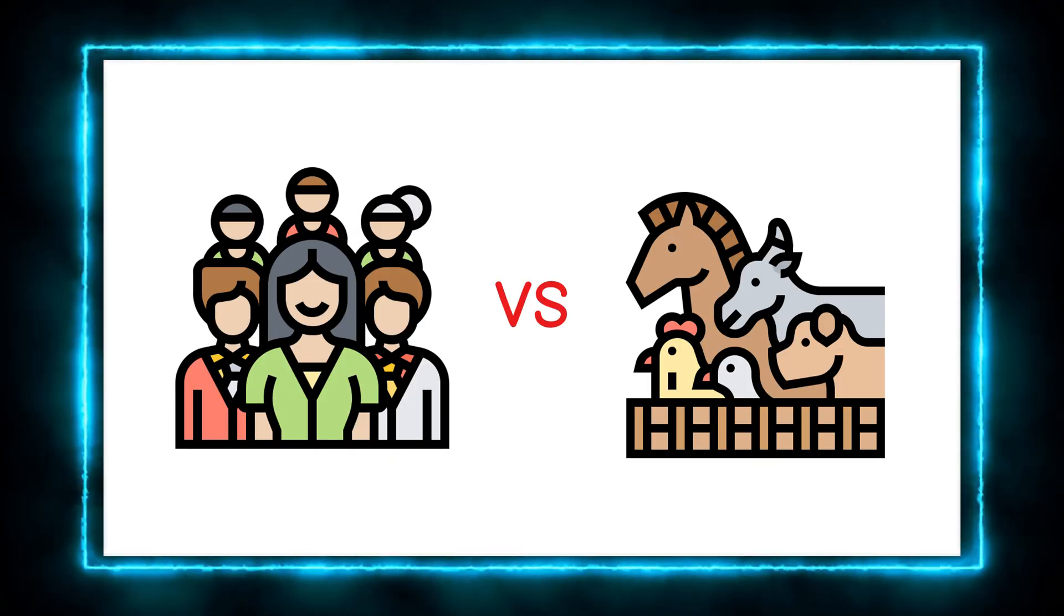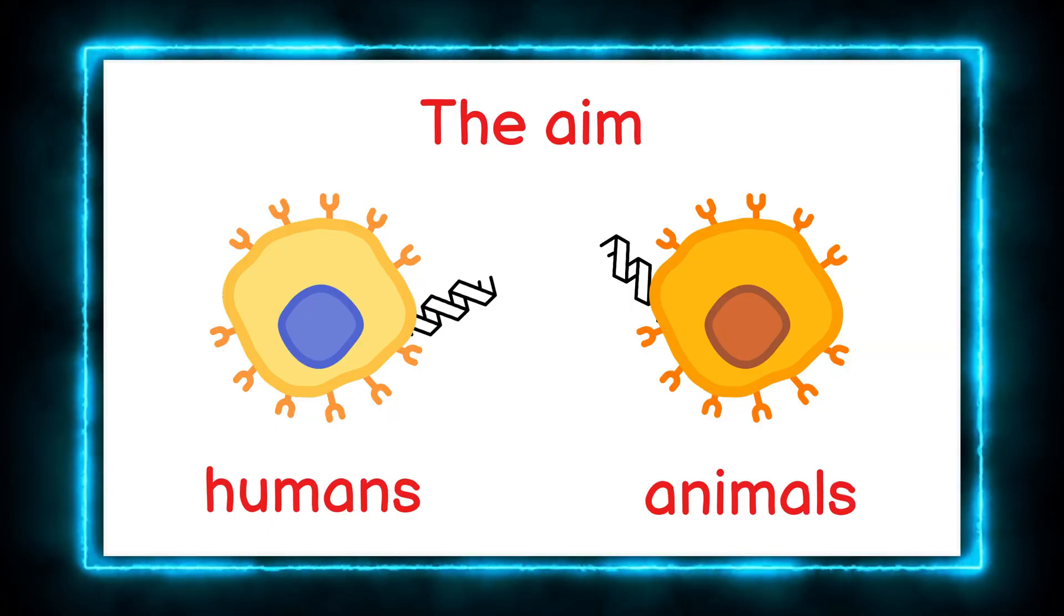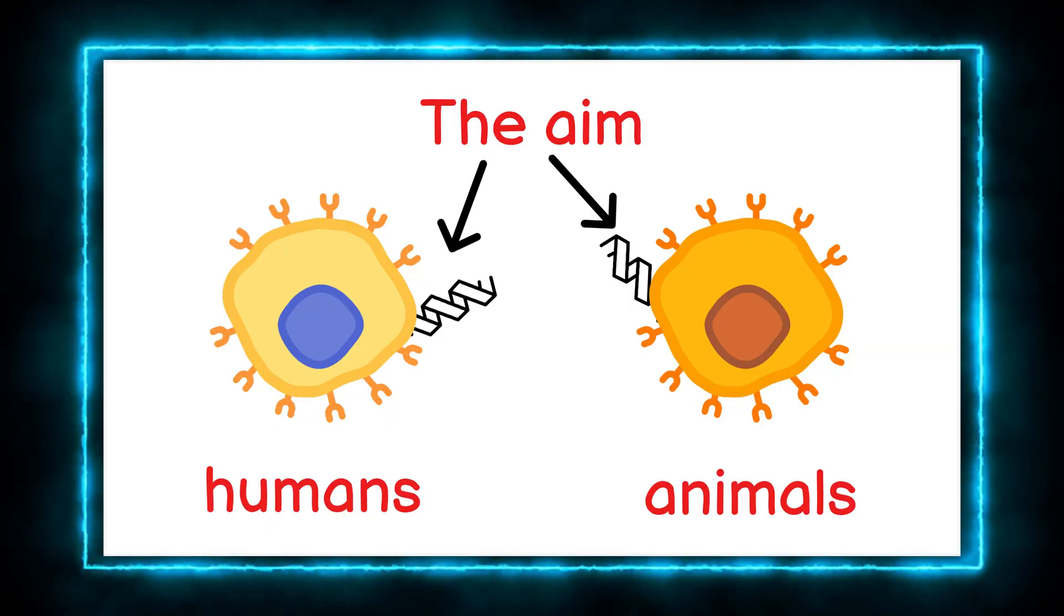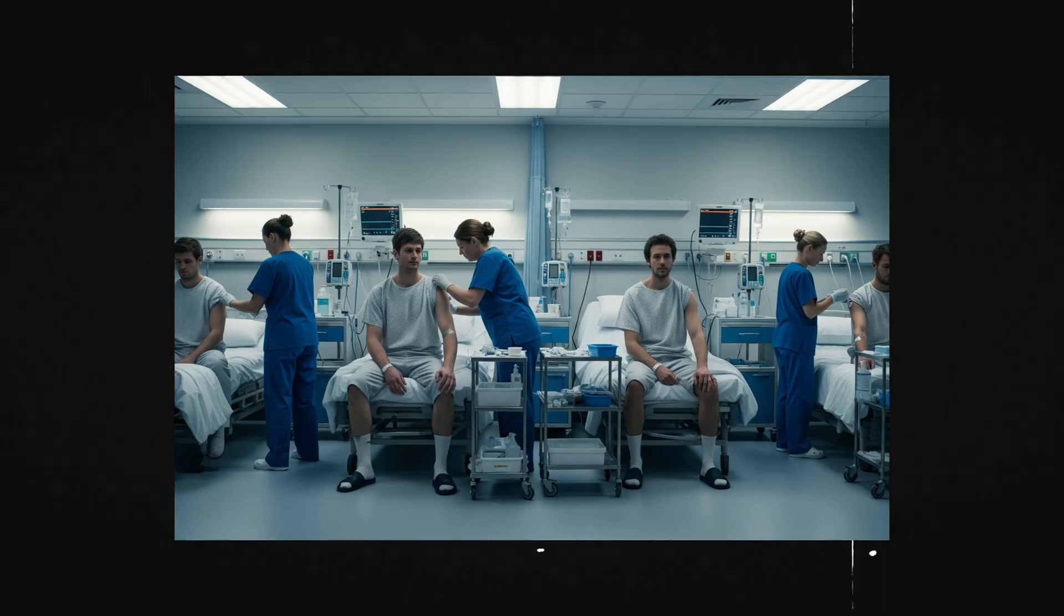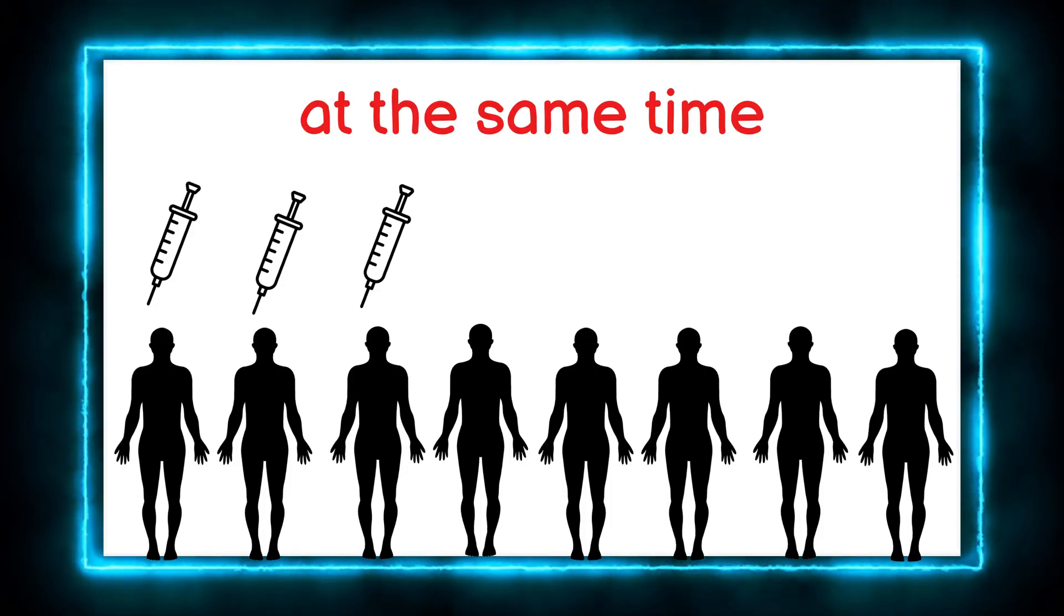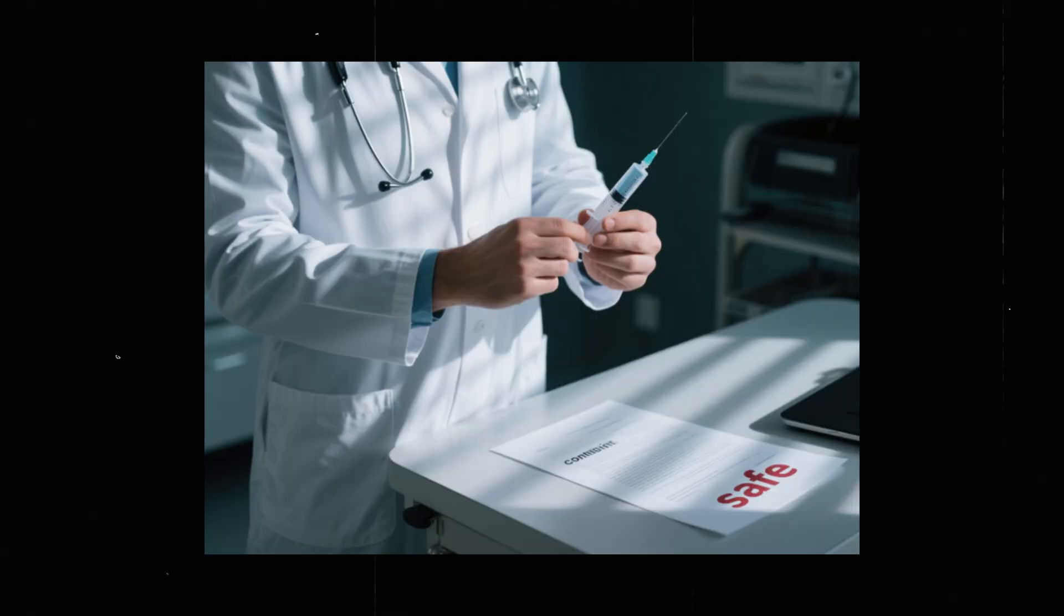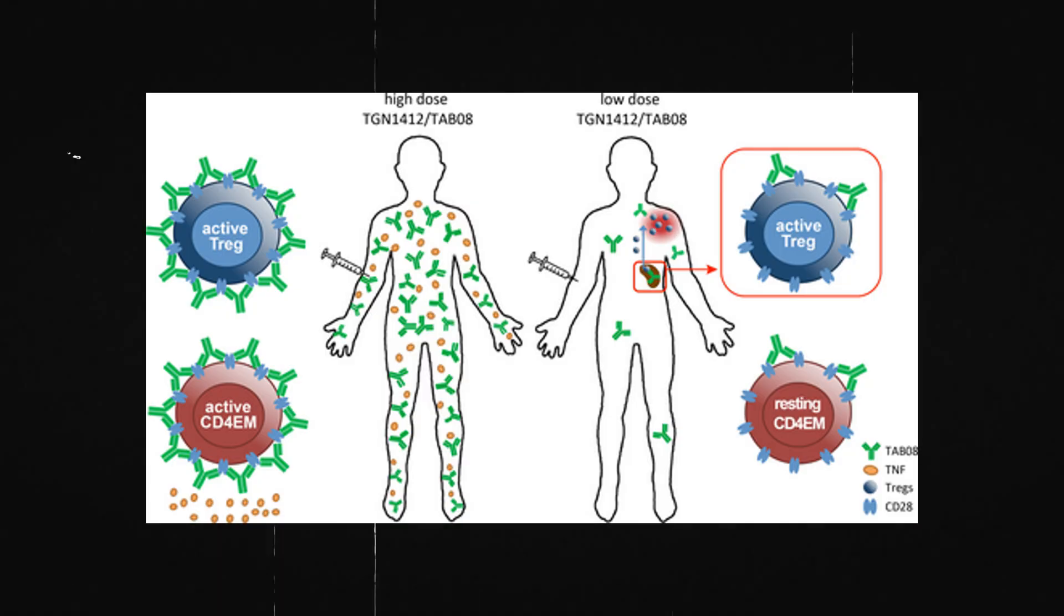Investigators found that humans reacted differently to TGN-1412 than animals. The drug's target was present on different immune cells, triggering an uncontrollable reaction. All six participants received the injections almost simultaneously. No one waited to see the first reaction, removing any chance to stop the trial early. And although the starting dose seemed safe in animals, it was too high for humans.